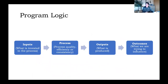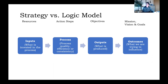In the middle of that mix of context, organizations, and all the other dizzying things, we've got our program logic. Inputs are the things invested in the process — staff, resources, dollars, materials. Processes are the things that we do to achieve our goals. Outputs are what the product of our organization and program is going to be. And outcomes are the things that we're trying to achieve in the world.